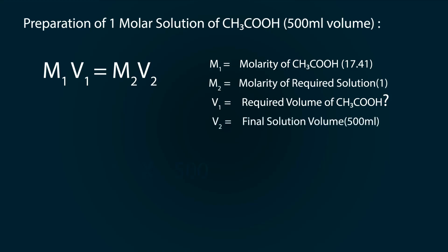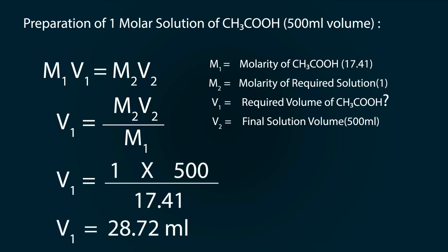which is 500 milliliters. Now rearrange the formula and put values into it, we get our volume as 28.72 ml. Let's start preparation. First of all take volumetric flask of 500 milliliter and put funnel on the top.